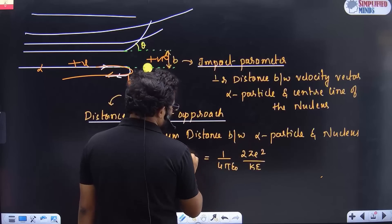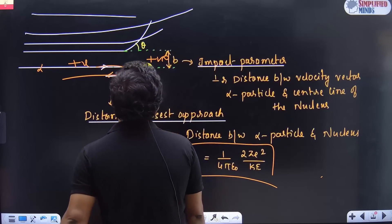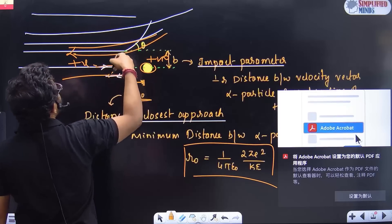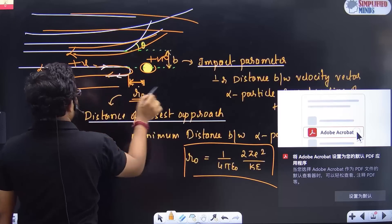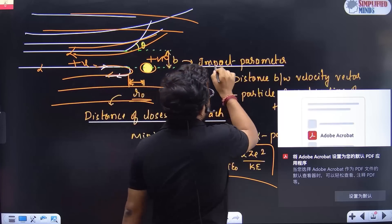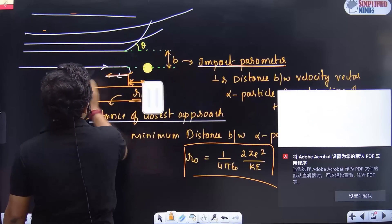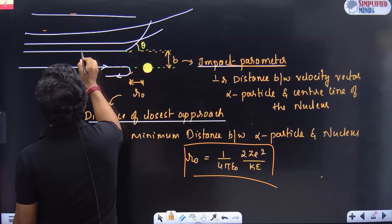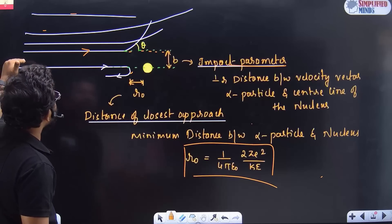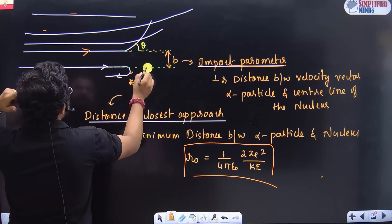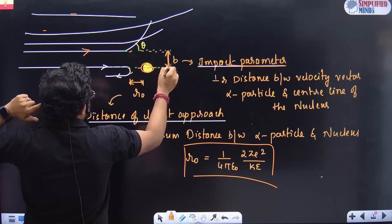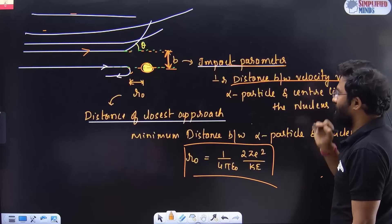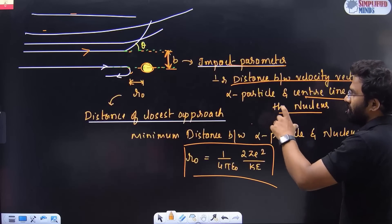The distance of closest approach can be found using a formula. Now the other term: impact parameter. Draw a perpendicular line from the center of the nucleus to the direction of the velocity vector of the alpha particle. The perpendicular distance between the velocity vector of the alpha particle and the center line of the nucleus is called the impact parameter.